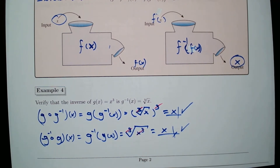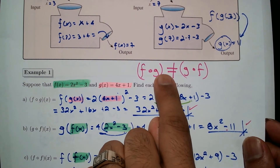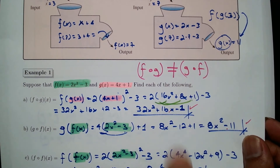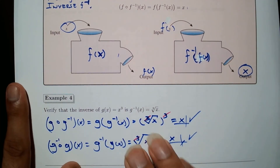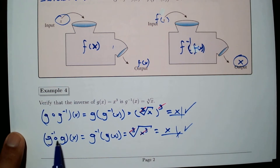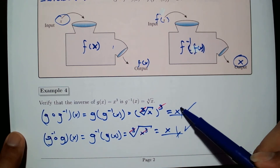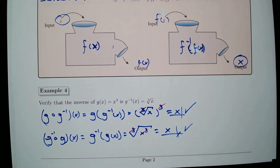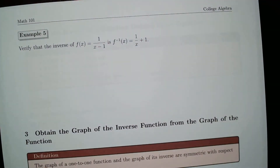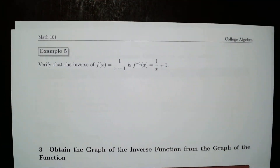Note from the previous section: in general, f composed with g is not the same as g composed with f. However, when we have a function and its inverse, the order doesn't matter — doing one then the other, or the other then one, both compositions yield x. Let's look at another example to verify that two functions are inverses.